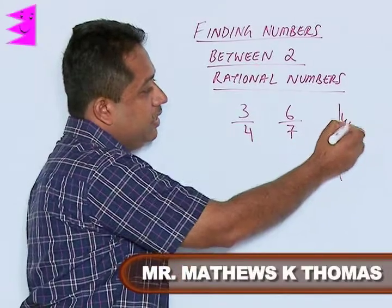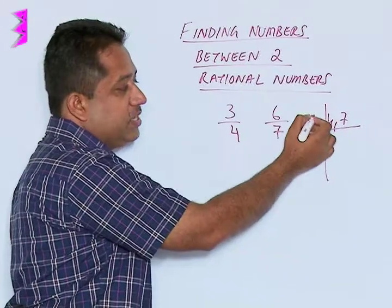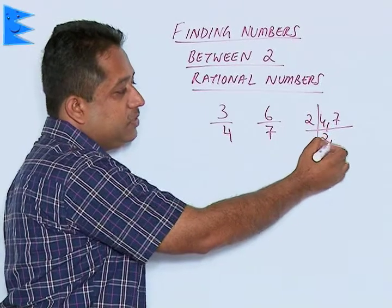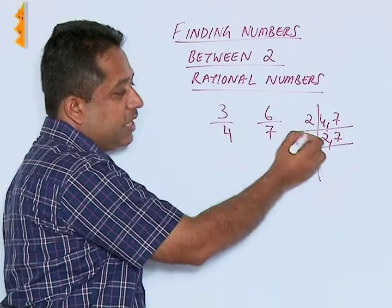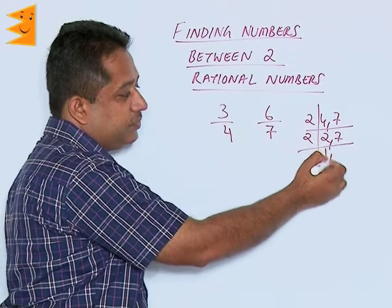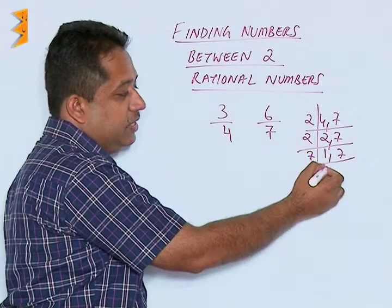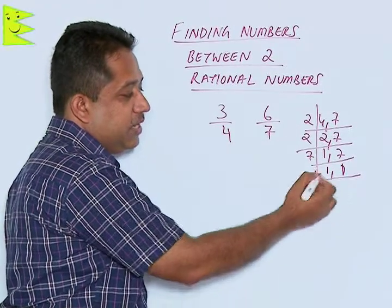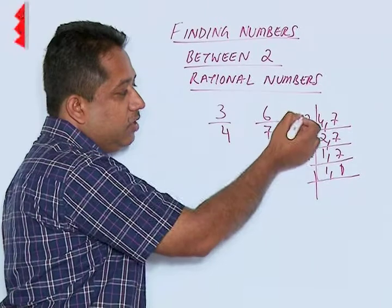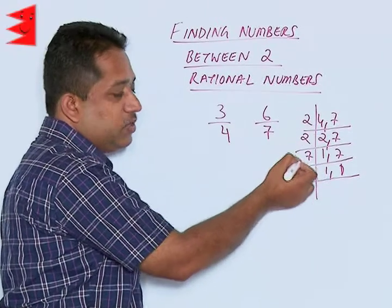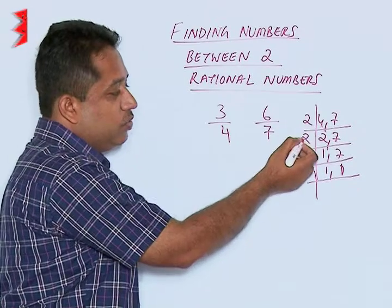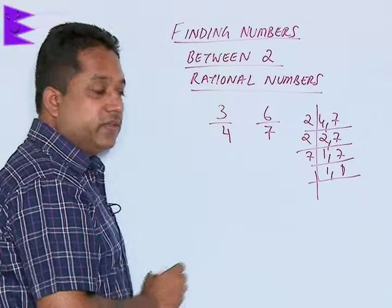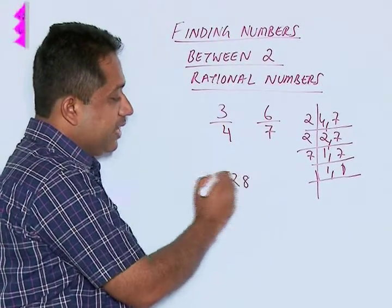Look at the LCM method. We are starting with the prime number 2. 2 goes 2 times, 7 remains as it is. Again 2: 1, and this is 7 going once. The process is repeated till we get 1. Now look at the factors here: 2 into 2 is 4, and 4 into 7 we get 28. So the LCM is 28.